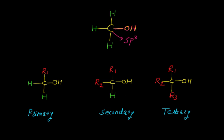In primary alcohol, when one hydrogen atom gets replaced with any alkyl group such as R1, such a compound is known as primary alcohol. We also have to remember that if all three hydrogen atoms remain as they are, then the compound is also a primary alcohol.